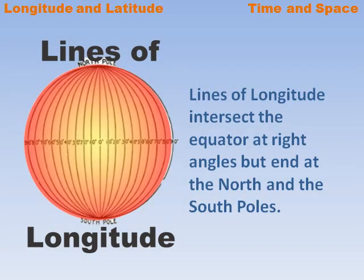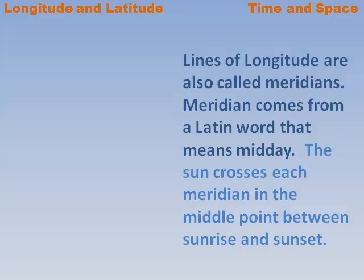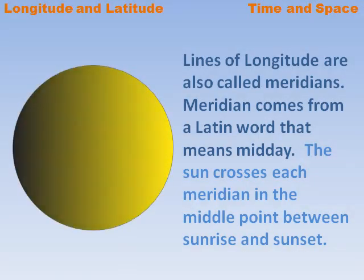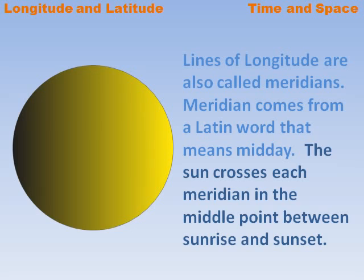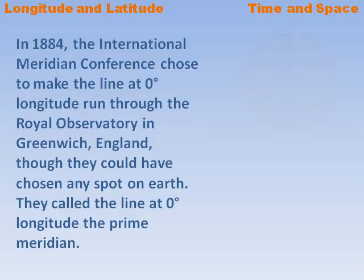Lines of longitude intersect the equator at right angles but end at the North and South Poles. Lines of longitude are also called meridians. Meridian comes from a Latin word that means midday, because the sun crosses each meridian at the midpoint between sunrise and sunset.